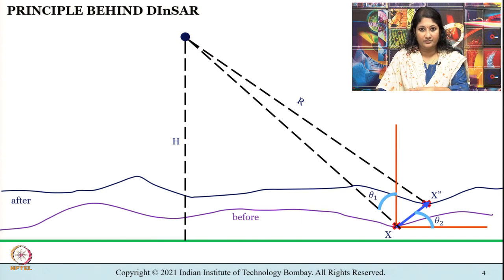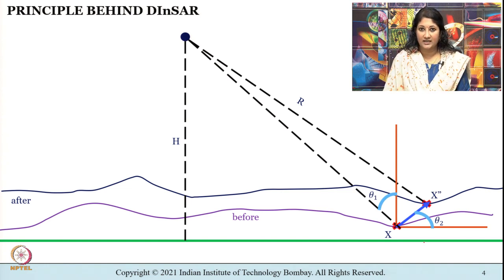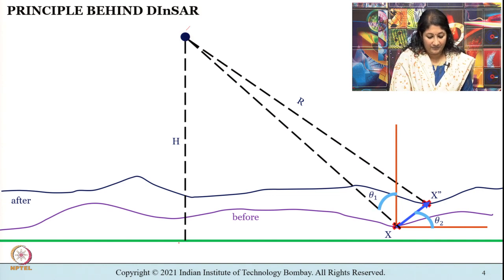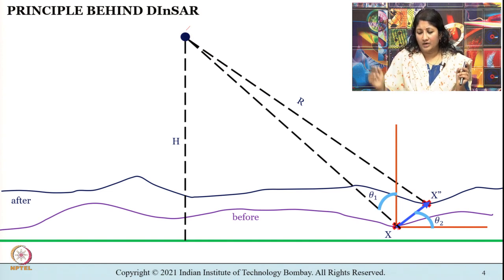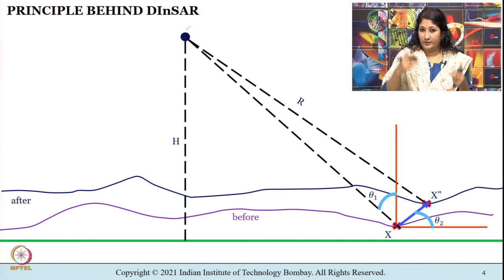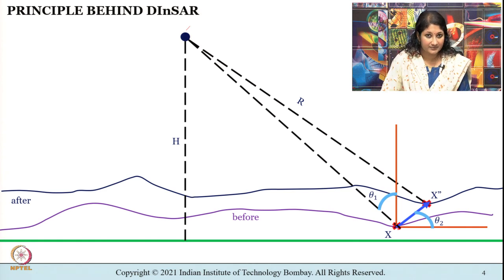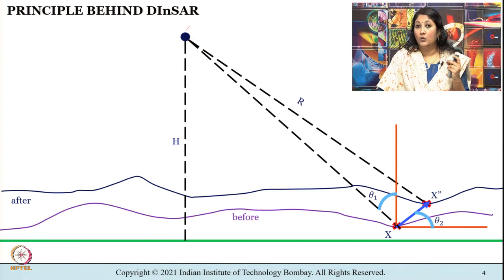To summarize the diagram: the green line is the mean sea level datum. The satellite flies at altitude h above the datum. The ground surface is shown before and after movement. The same point x has shifted by a small amount to x2-dash between the two flight paths — both following the exact same path so baseline is 0. The range distance and angles theta-1 and theta-2 are self-explanatory as seen in the diagram.